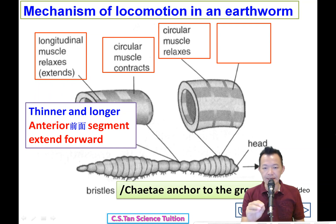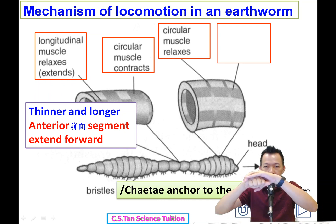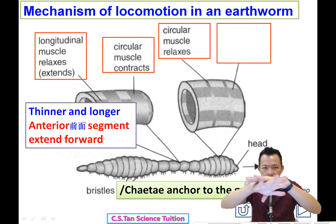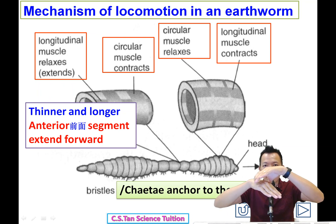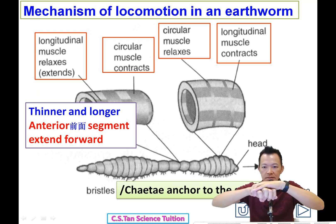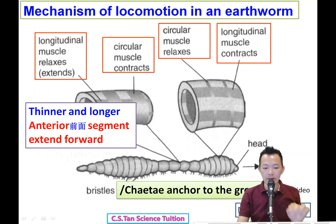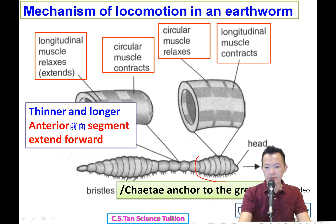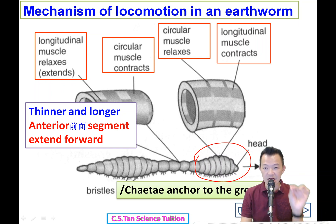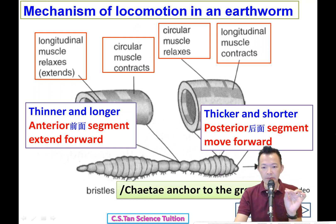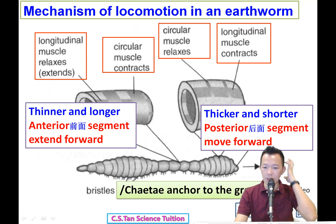After the setae anchor to the ground, the circular muscle relaxes and the longitudinal muscle contracts, shortening the body. The body becomes thicker and shorter, and the posterior segment is pulled forward to catch up.